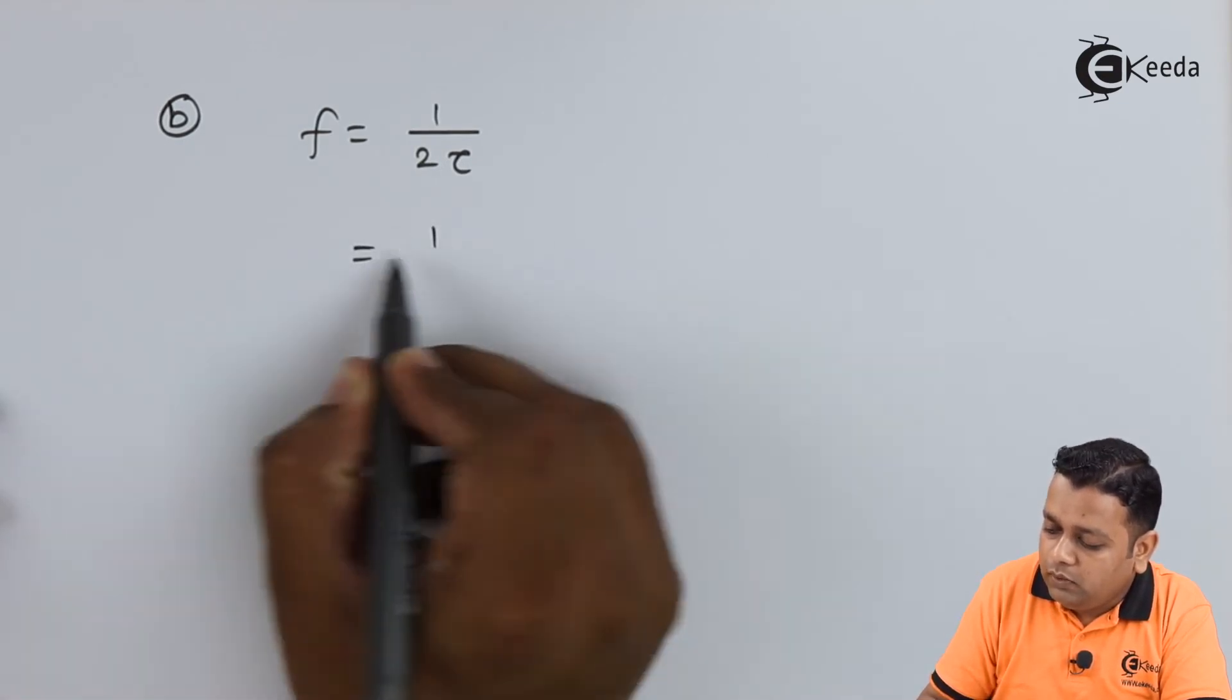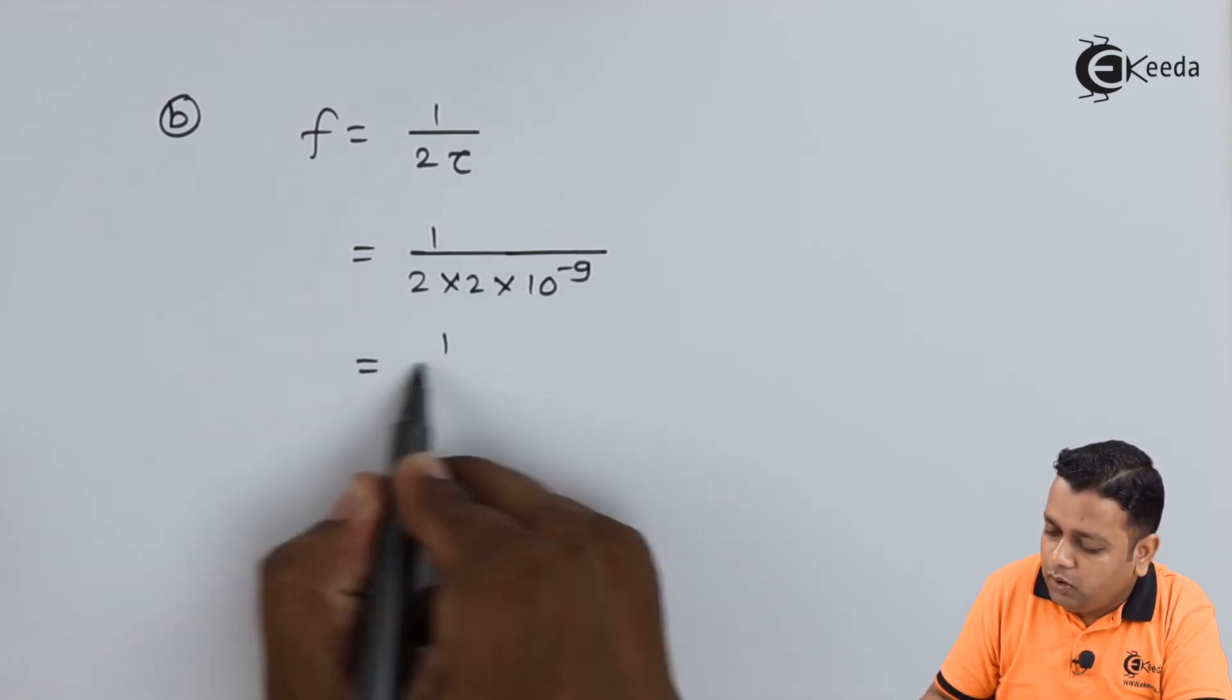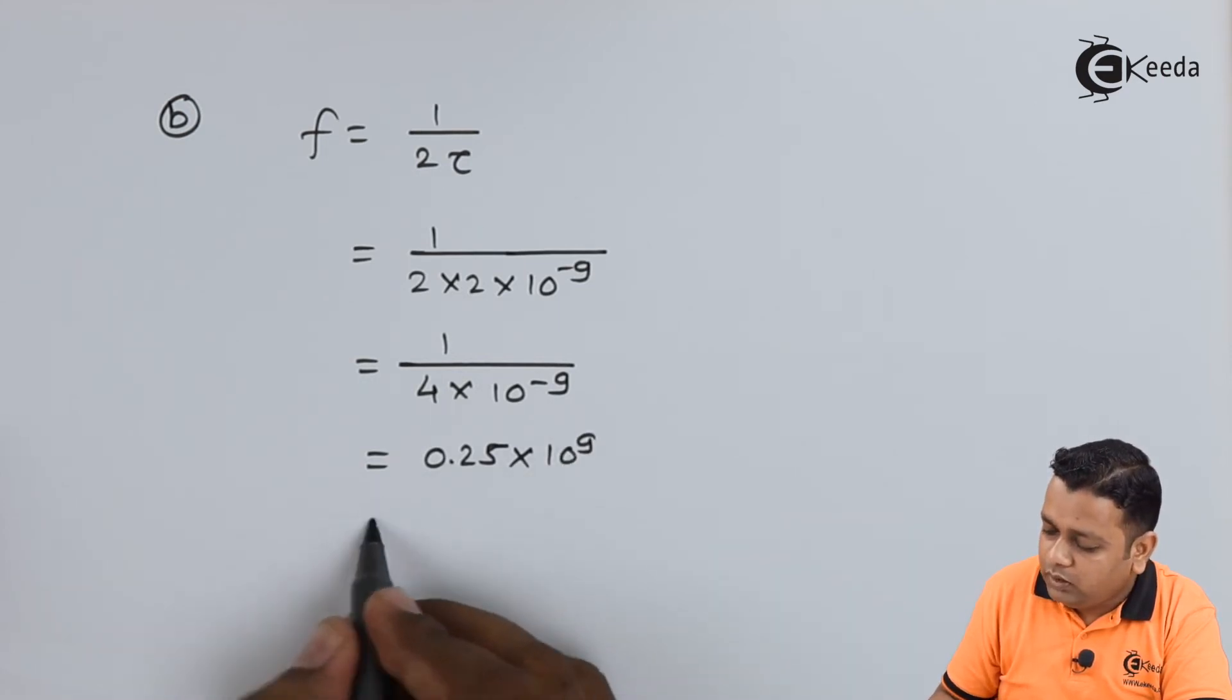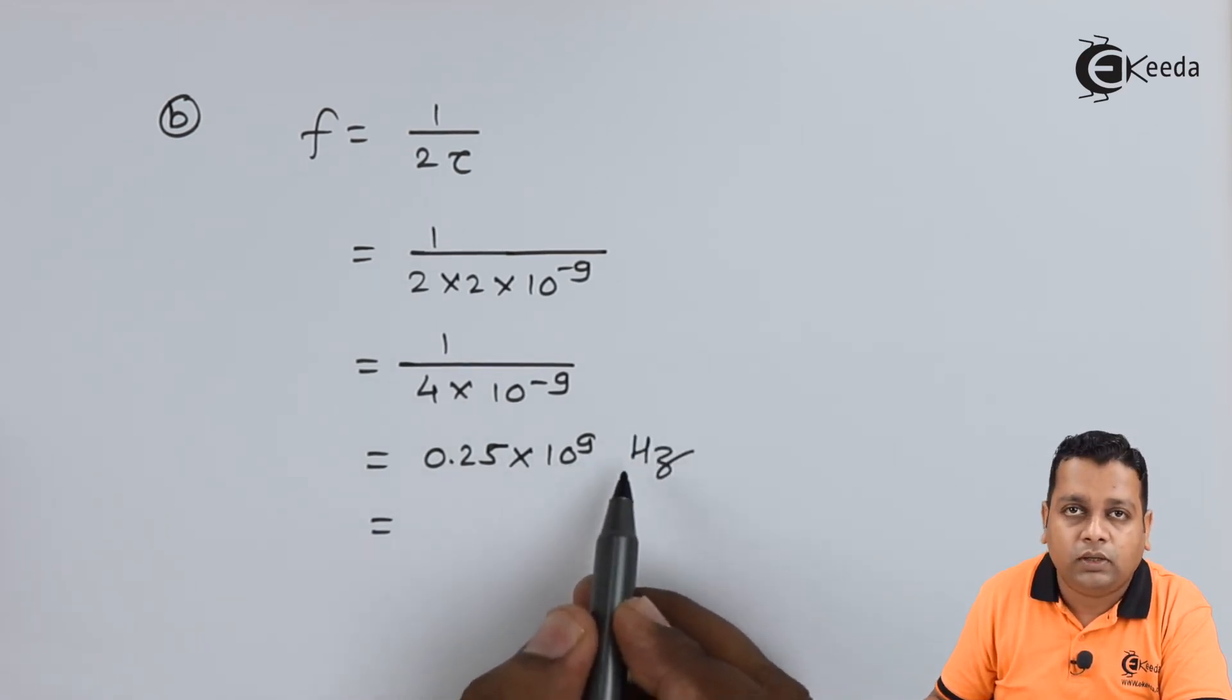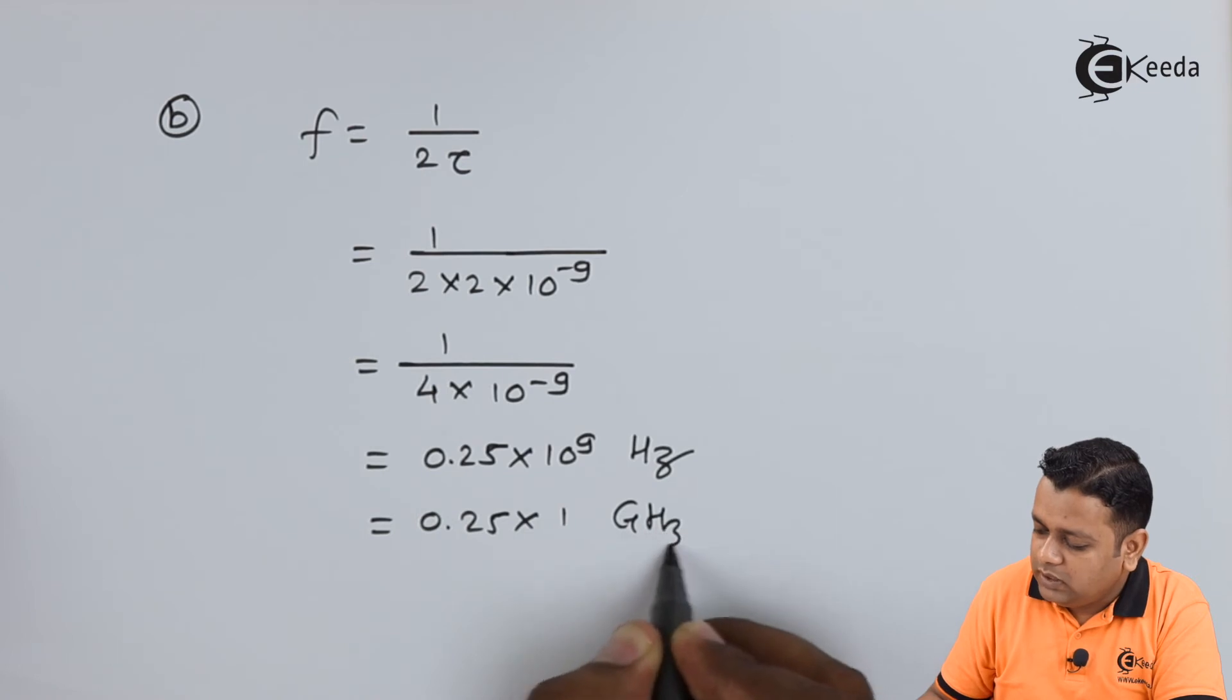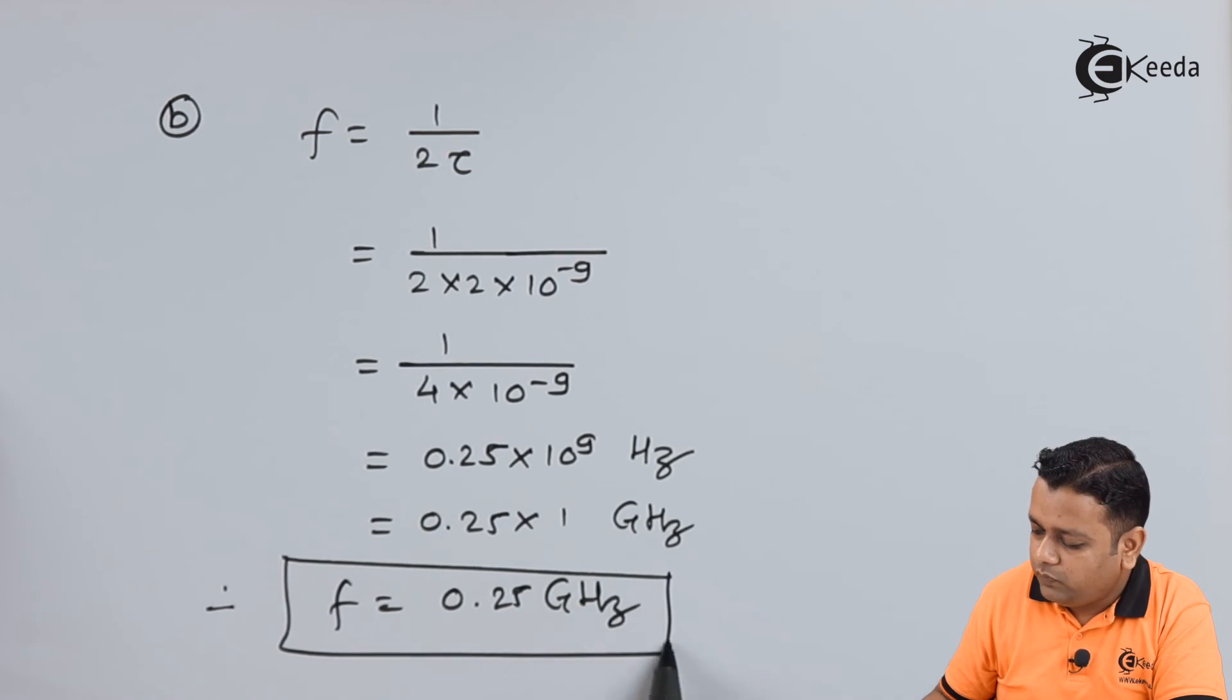Therefore, we keep 1 divided by 2 into the tau value, which is 2 into 10 raised to the power minus 9. This makes 1 upon 4 into 10 raised to the power minus 9. Again, this gives us 0.25 into 10 raised to the power plus 9. Therefore, as this is the frequency, the SI units is hertz. Getting 10 raised to the power 9 absorbed into the multiplication coefficient, we can represent 0.25 Gigahertz. Finally, F can be represented as 0.25 Gigahertz.